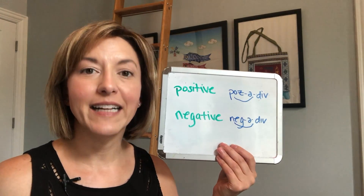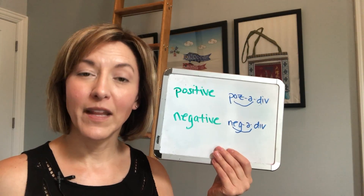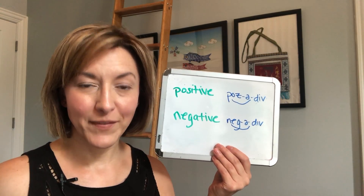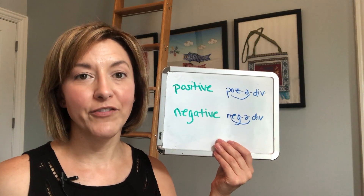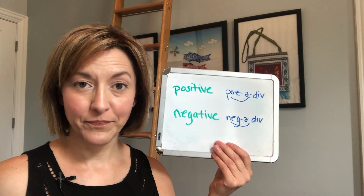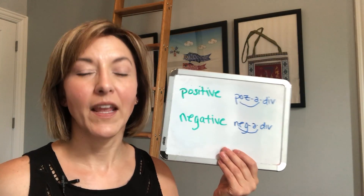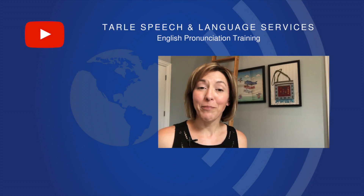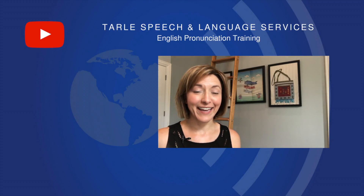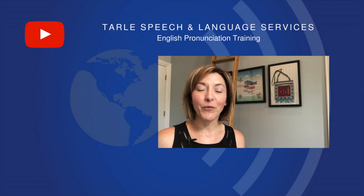Connect 'neg' to the schwa syllable to get 'nega,' then end with 'div' again — 'negative.' Let's practice: 'positive,' 'negative,' 'positive,' 'negative.' I like both your positive and negative comments — give it a try! I know people are going to notice the difference.